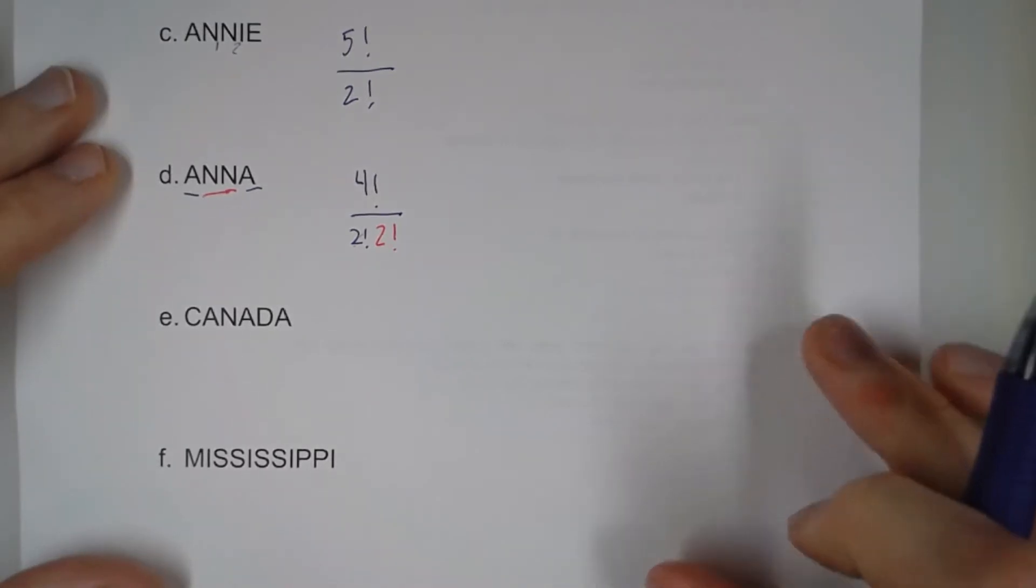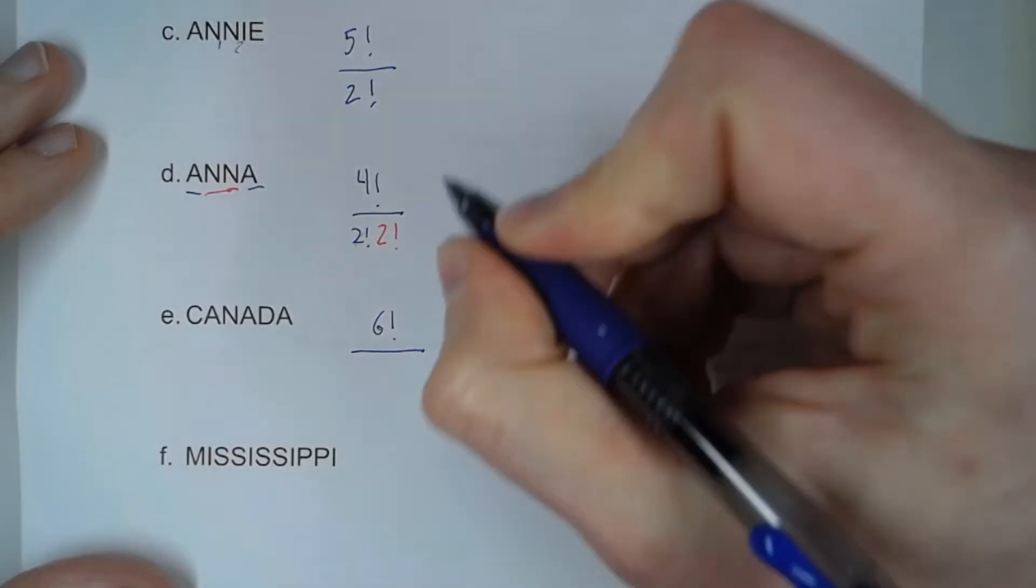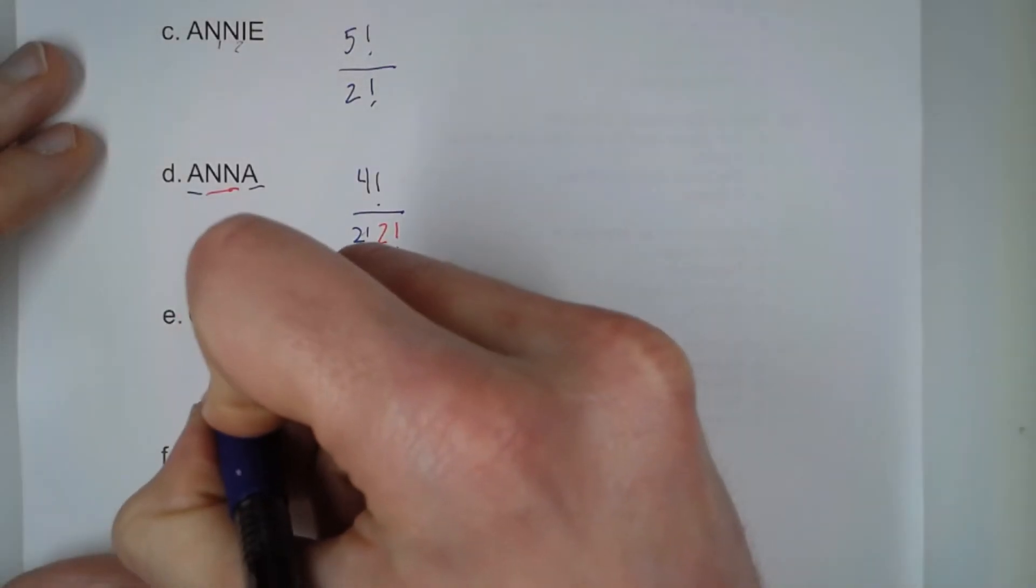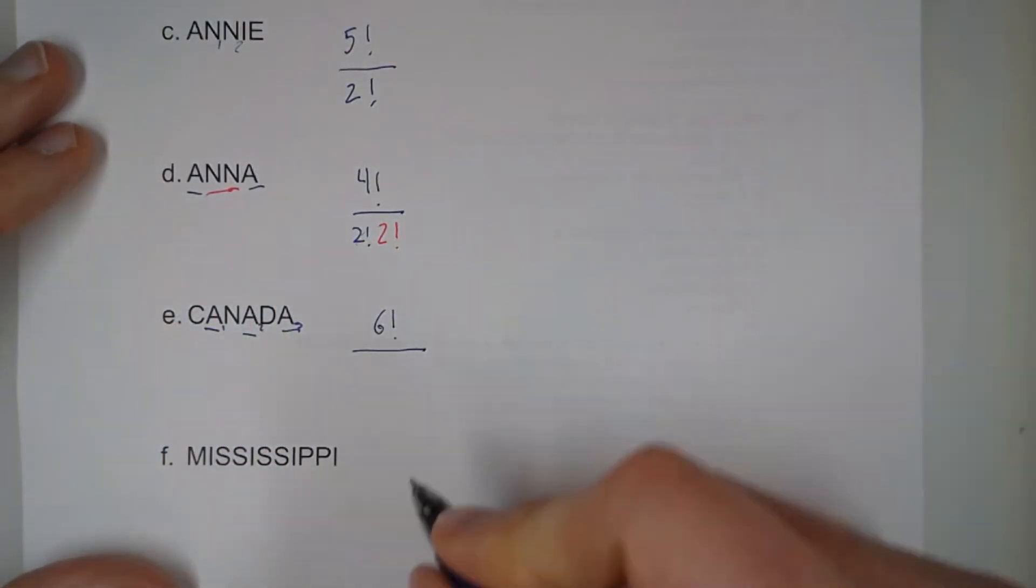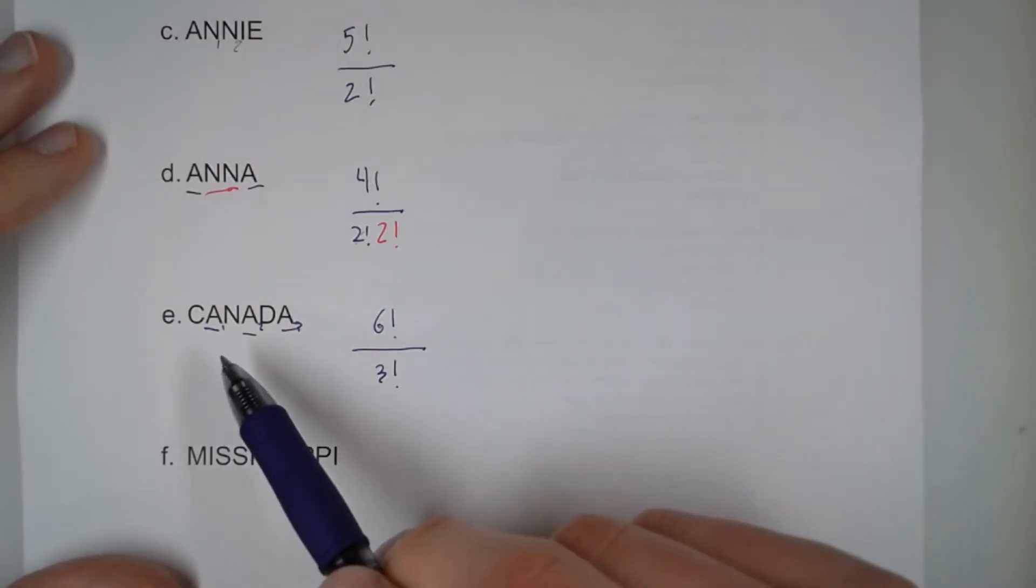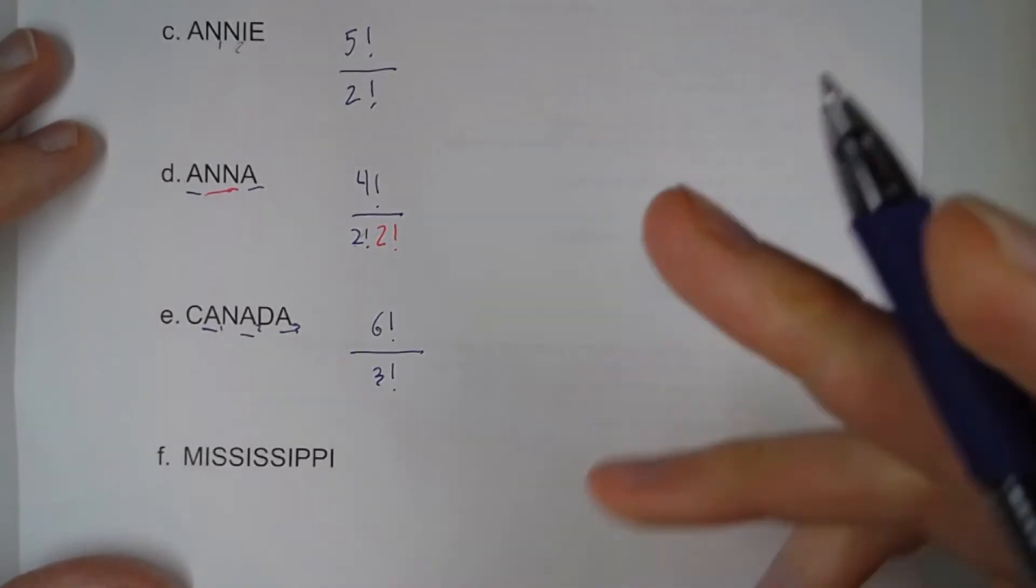Letter E, Canada. Now, here we have six letters overall, but we have one, two, three A's. So we can think of this as A1, A2, A3. Well, how many ways can we rearrange those three letters? Three factorial. So any time you have a repeat letter, you have to divide by however many of those letters there are, factorial.